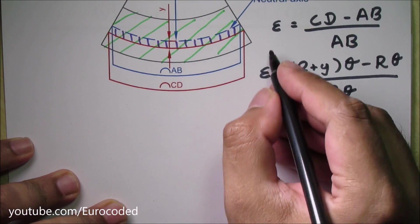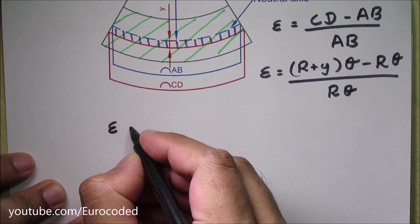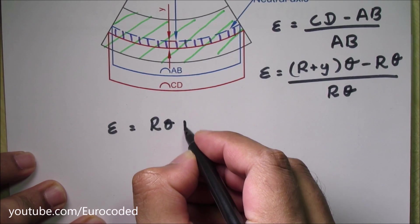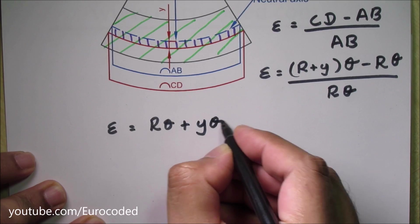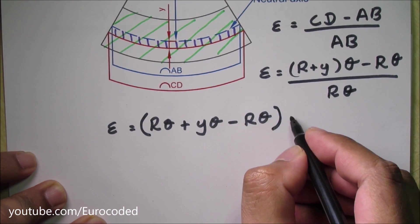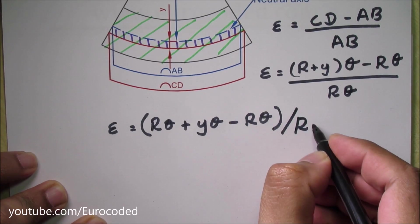We can rewrite this expression as strain is equal to R theta plus Y times theta minus R times theta over R times theta.